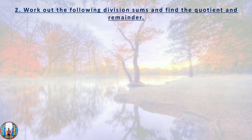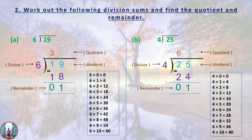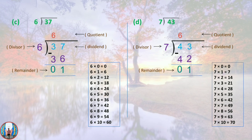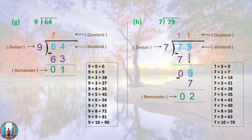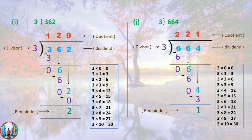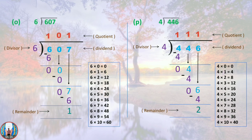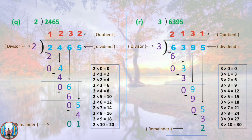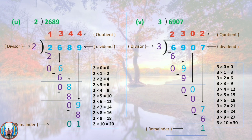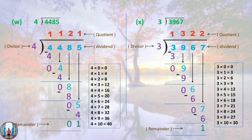Second question: Work out the following division sums and find the quotient and remainder. These questions are set as homework for the students, but I have already done them. If you want to check your answers, please pause the video and match with questions A–B, C–D, E–F, G–H, I–J, K–L, M–N, O–P, Q–R, S–T, and W–X.